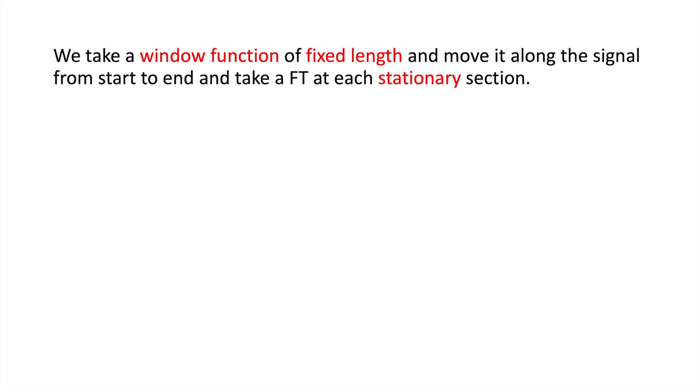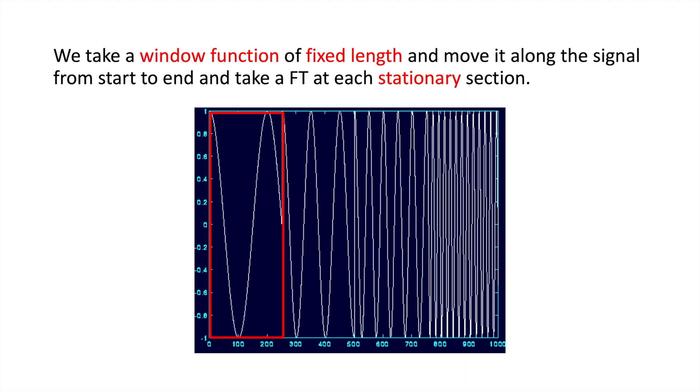What we do with the STFT is we take a window function of fixed length and move it along the signal from start to end and take a Fourier Transform at each stationary section. Our window function is a rectangle and we multiply it by a signal at each section. So the window function is a function that's zero-valued outside its given interval. So when the waveform is multiplied by the function, the product is zero-valued outside that interval. So where we multiply the signal by the rectangle, only the overlap is included of our signal. The rest of the signal becomes zero, which allows us to take the Fourier Transform of that given section. That is the STFT.